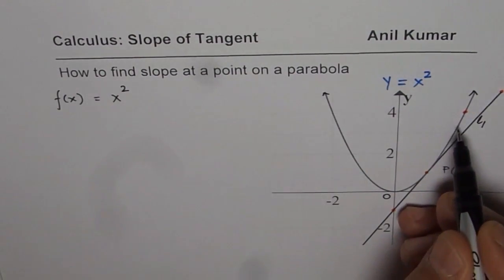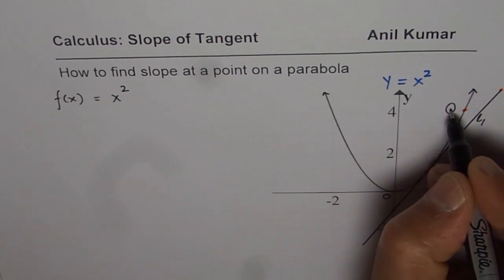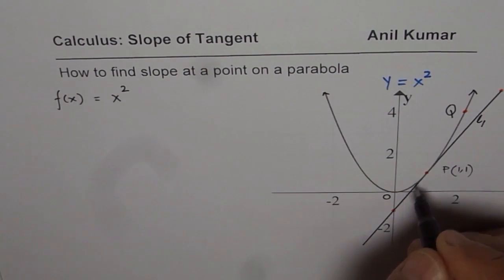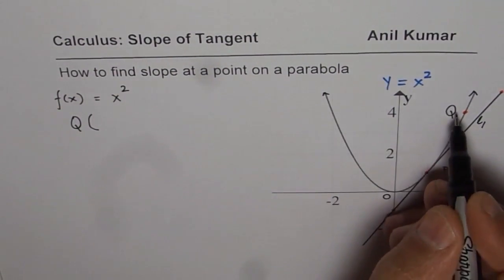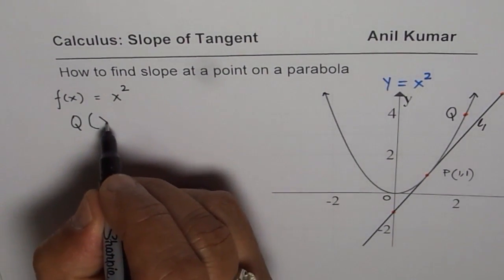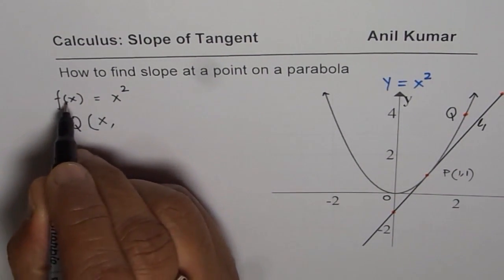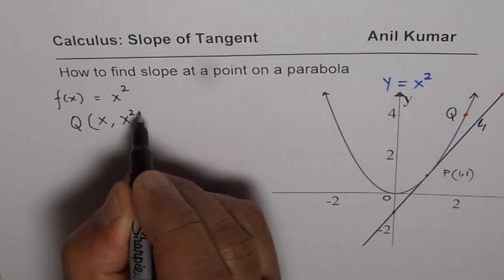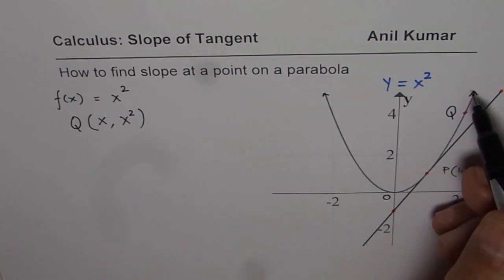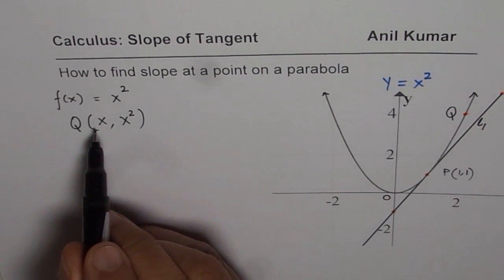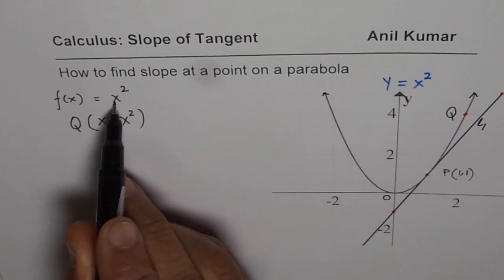So any point, we can consider any point Q on the graph of this function. So a point Q on the graph of the function will have x value of x and y value of x square. So any general point on this graph will be x comma x square. The value of the function is x square.